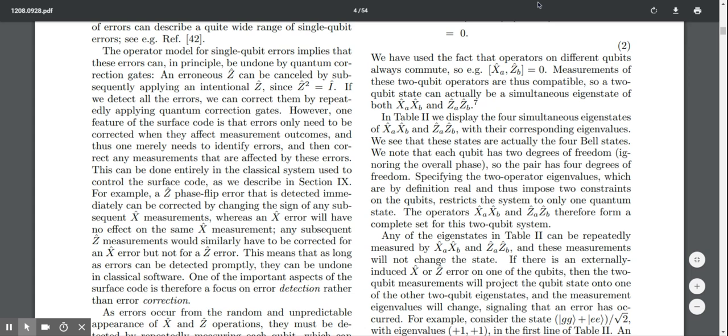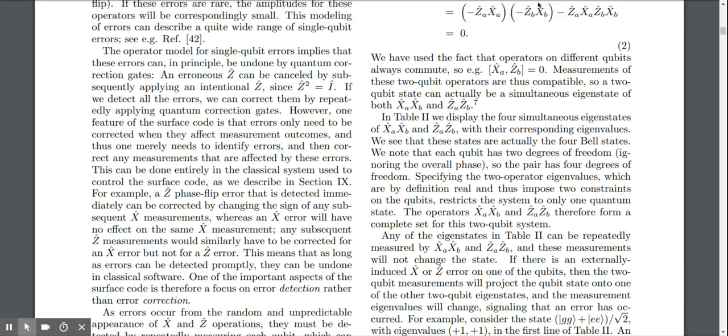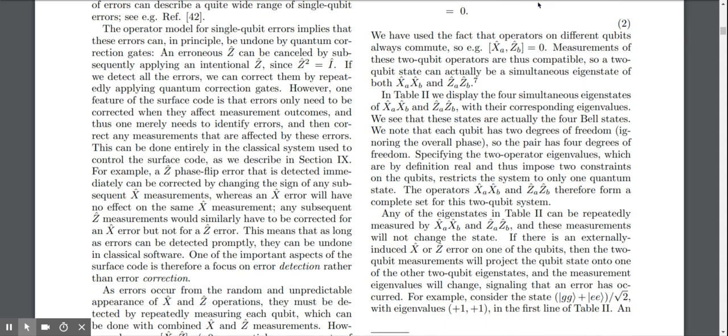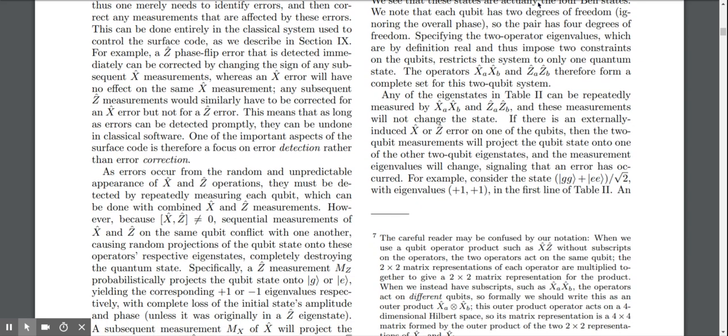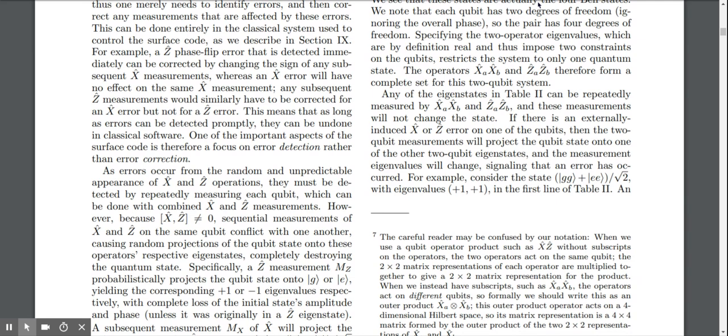An erroneous Z can be cancelled by subsequently applying an intentional Z, since Z applied twice equals the identity. However, one feature of the surface code is that the errors only need to be corrected when they affect measurement outcomes. Thus one merely needs to identify errors and then correct any measurements that are affected by these errors.